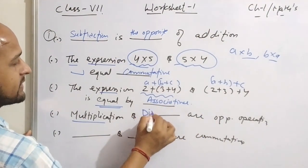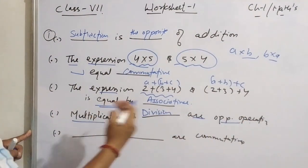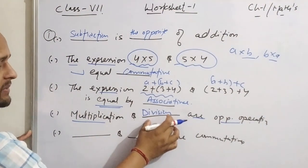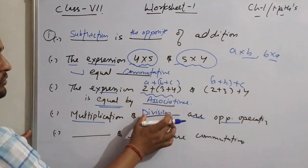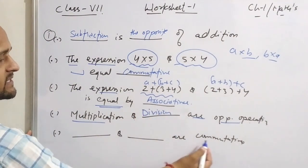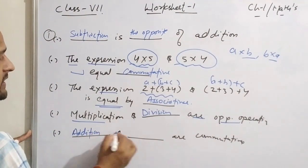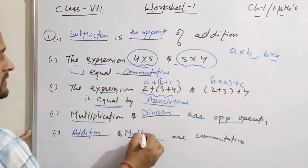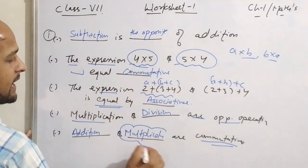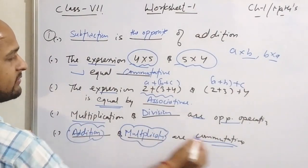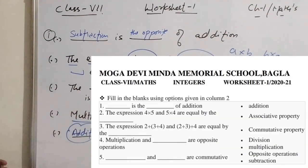Multiplication and division are opposite operations — multiplication's opposite is division. For the last blank, dash and dash are commutative: only addition and multiplication are the two operations applicable to both commutative and associative properties. That covers all of question number 1.